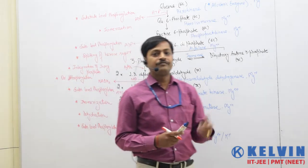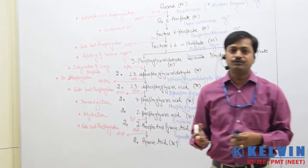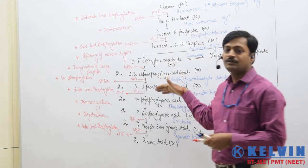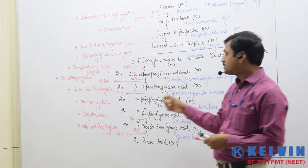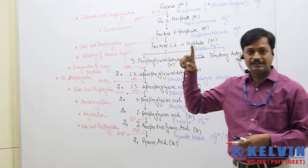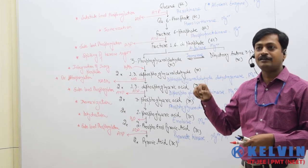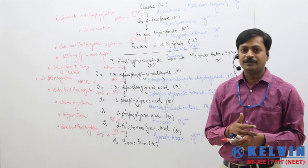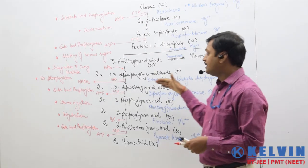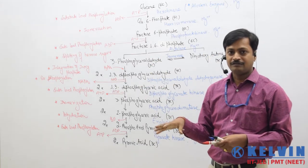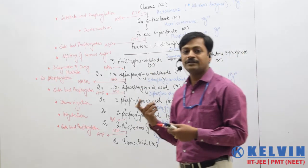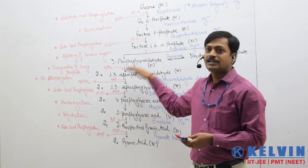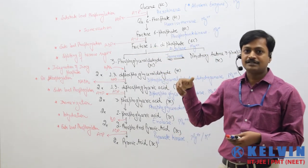NADH₂ or FADH₂ provide three or two ATP respectively when they enter the electron transport system (ETS). So if this is aerobic glycolysis, these two NADH₂ molecules enter the final step — the ETS — and six ATP are formed, because from one molecule of NADH₂ we get three ATP during ETS. If these NADH₂ molecules enter the mitochondria, which is the case during aerobic respiration, this is equivalent to six ATP.